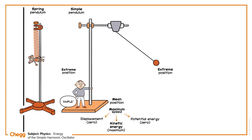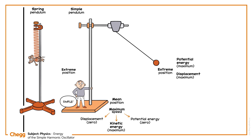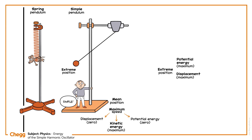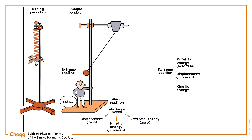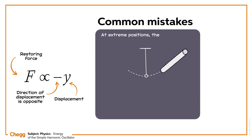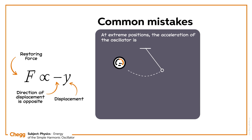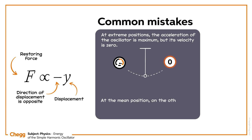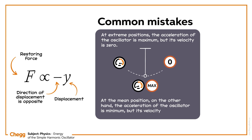Similarly, at the extreme positions, the displacement is maximum, and so the potential energy is maximum. At these extreme positions, the oscillator momentarily comes to rest and takes its path back, so the kinetic energy at these positions is minimum — zero. At extreme positions, the acceleration of the oscillator is maximum but its velocity is zero. At the mean position, on the other hand, the acceleration of the oscillator is minimum but its velocity is maximum.